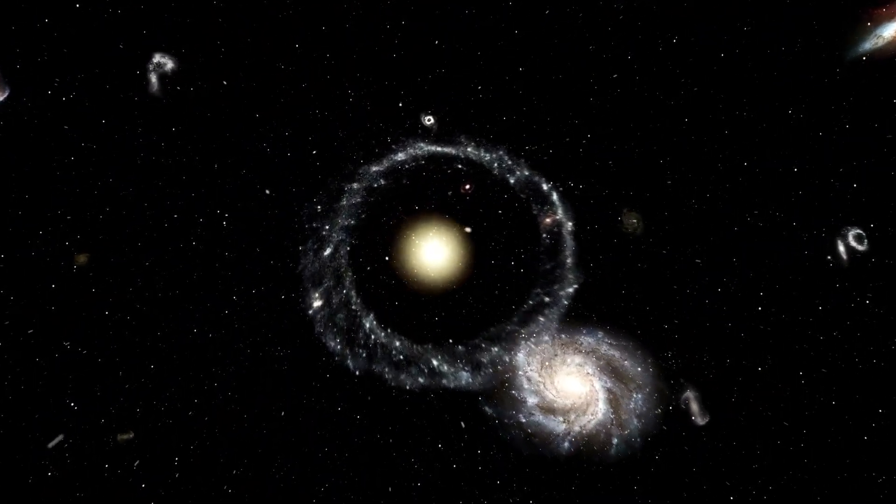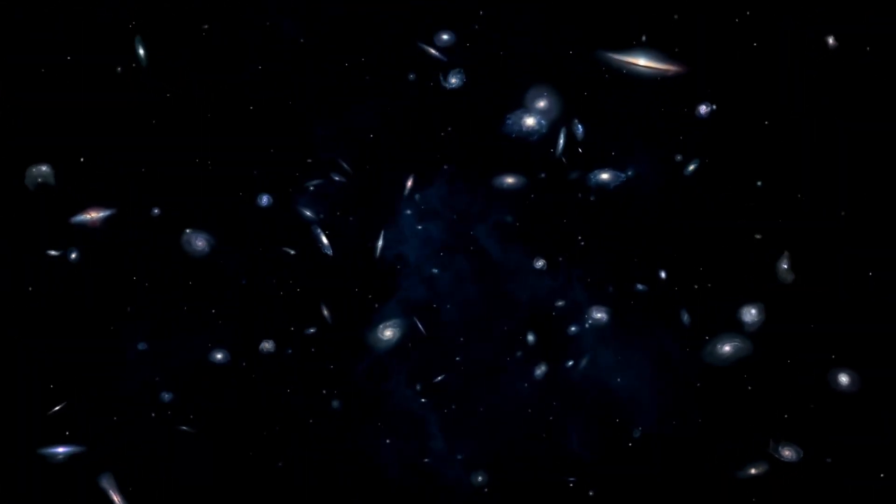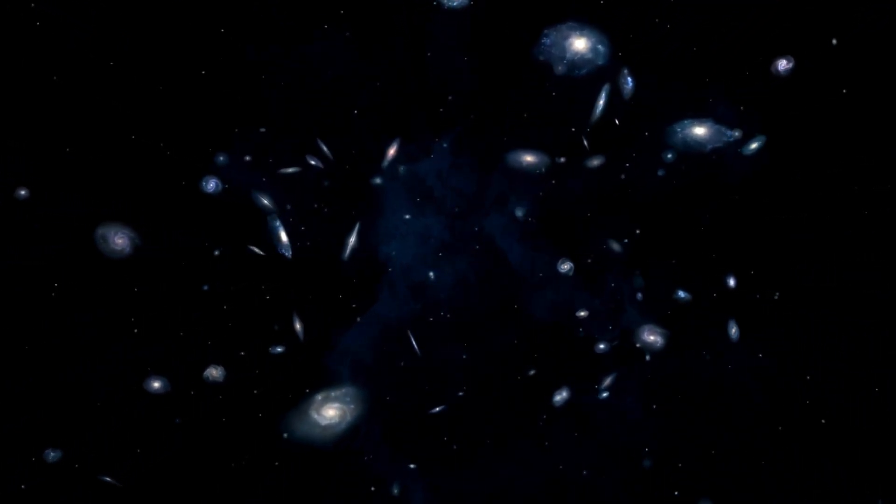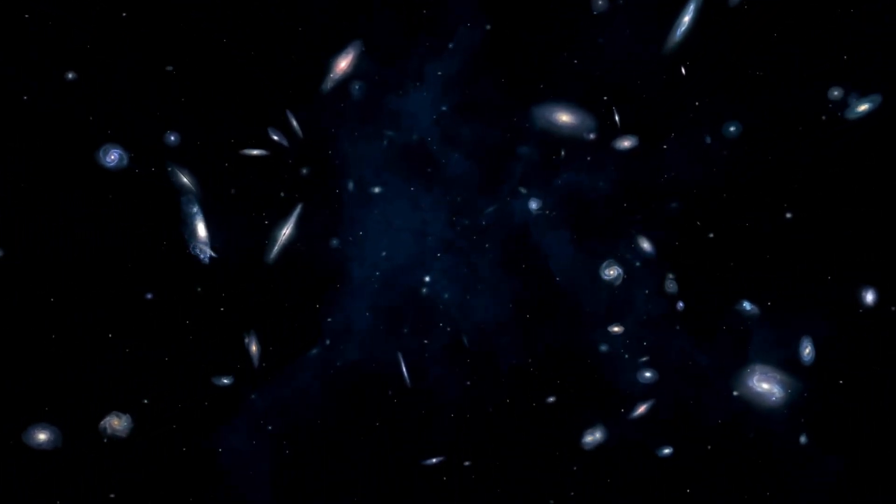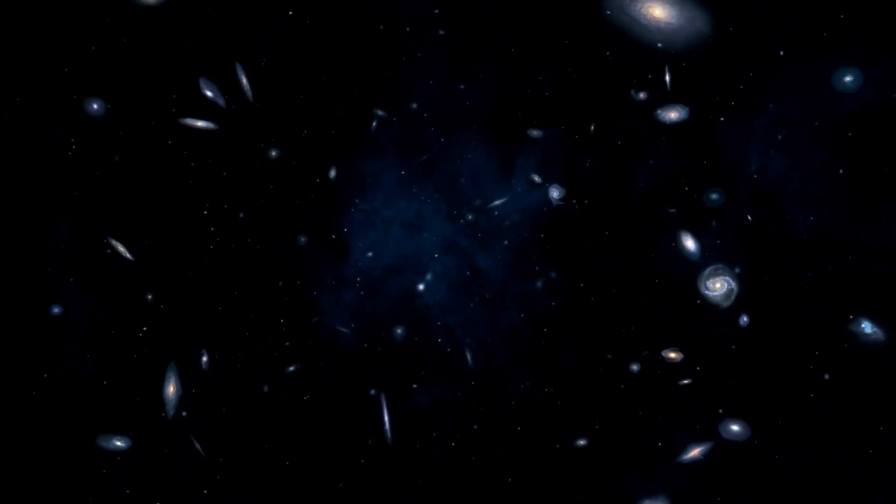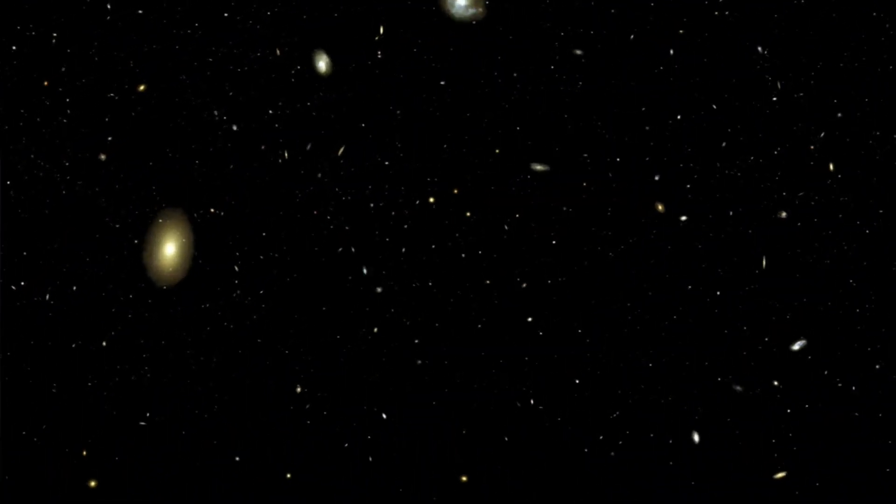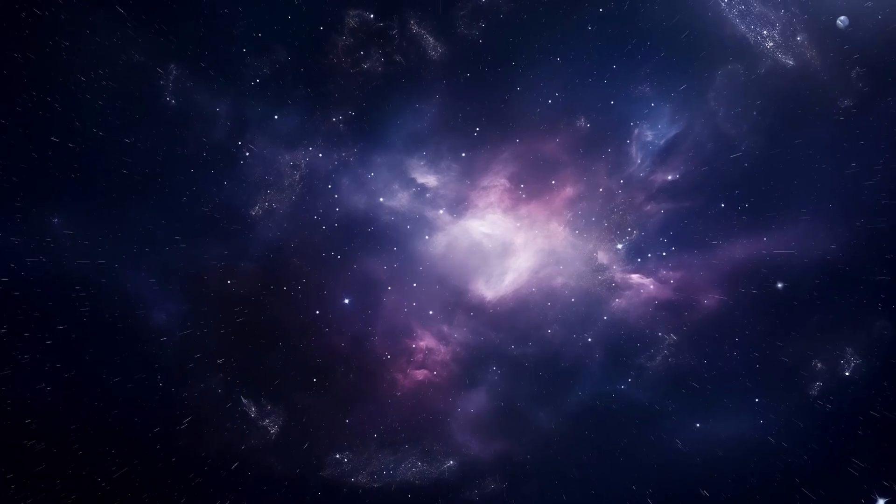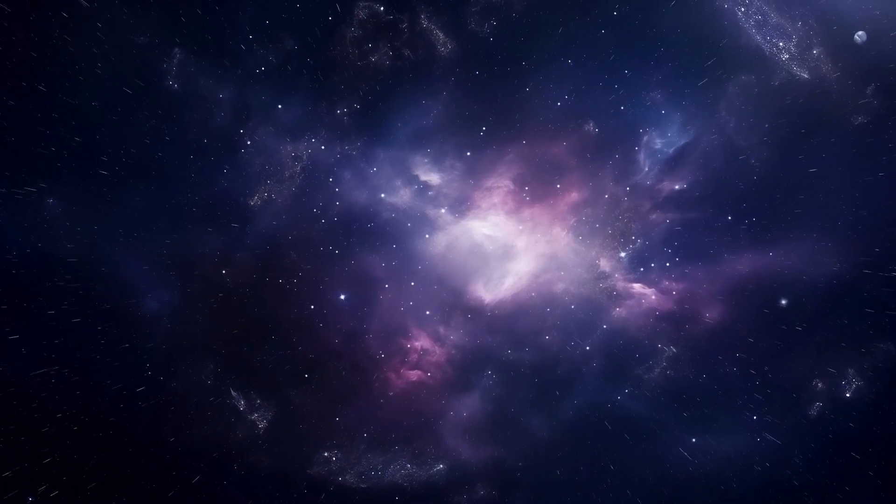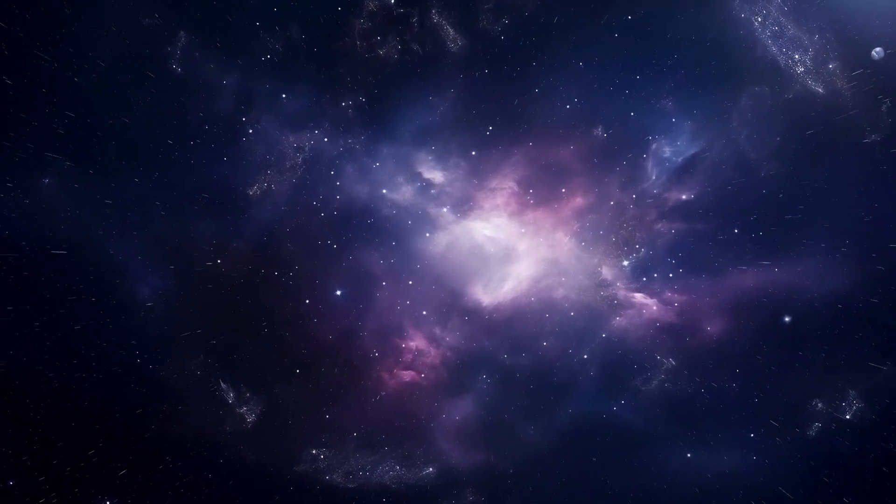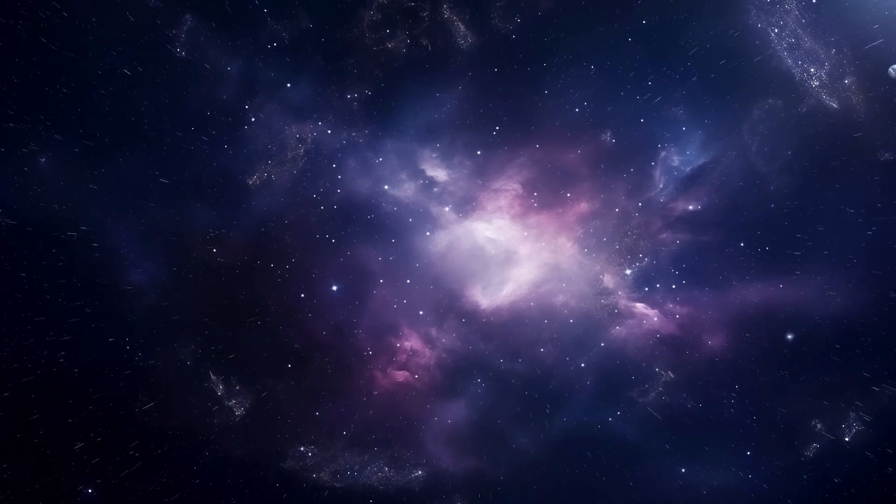Einstein's theory of general relativity has significant implications for how the universe is structured. Initially, he added something called a cosmological constant to his equations because he thought the universe was static. However, when we discovered it is expanding, he referred to this as a big mistake. The idea of an expanding universe based on general relativity is a key part of the Big Bang Theory, which explains how the universe began.